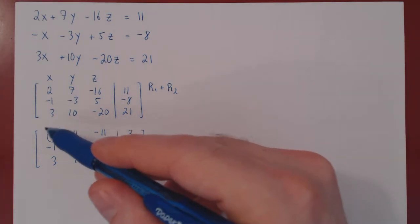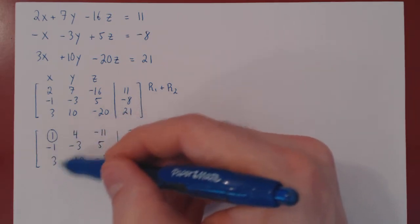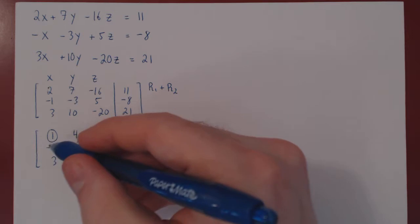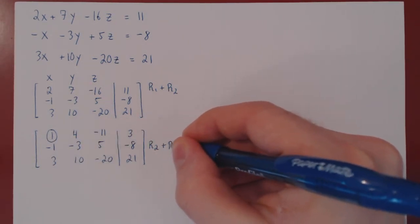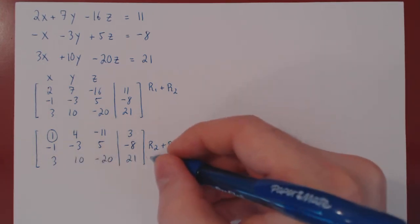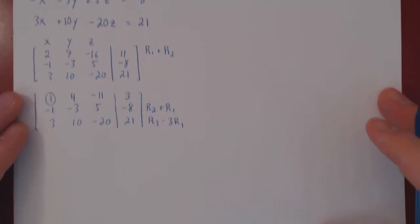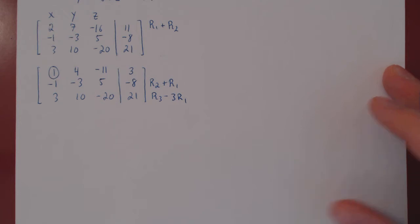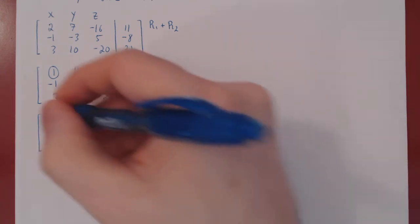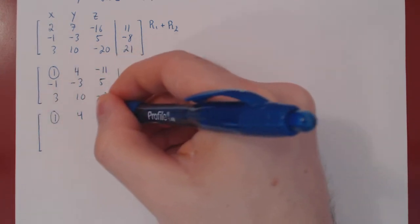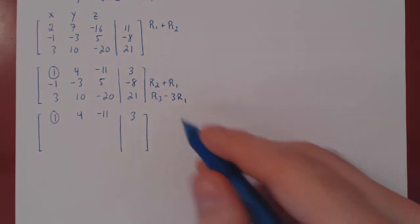Now we have our leading 1 in the leftmost column in the top row. As always, we then kill the entries below it, and always do this in one go. So to kill this negative 1, we will do row 2 plus row 1. To kill this positive 3, we will do row 3 minus 3 times row 1. We are not changing row 1, so we can recopy it. Always recopy the rows you are not changing first. Let's apply the first row operation.